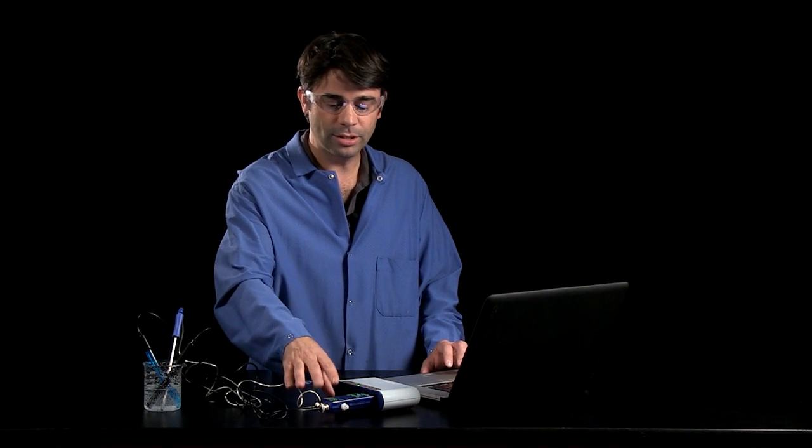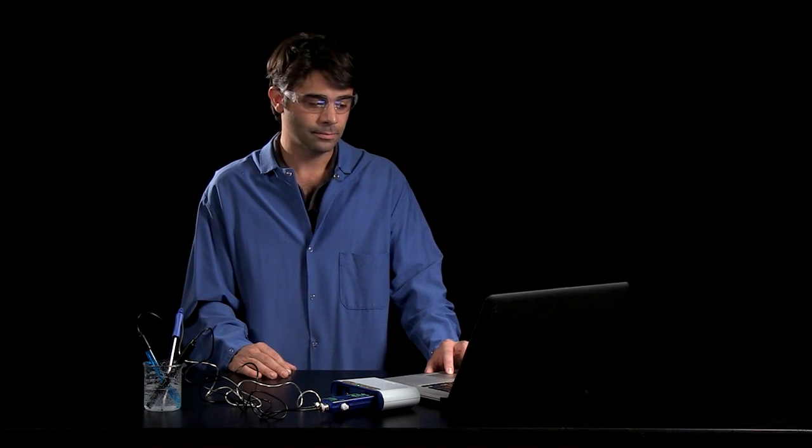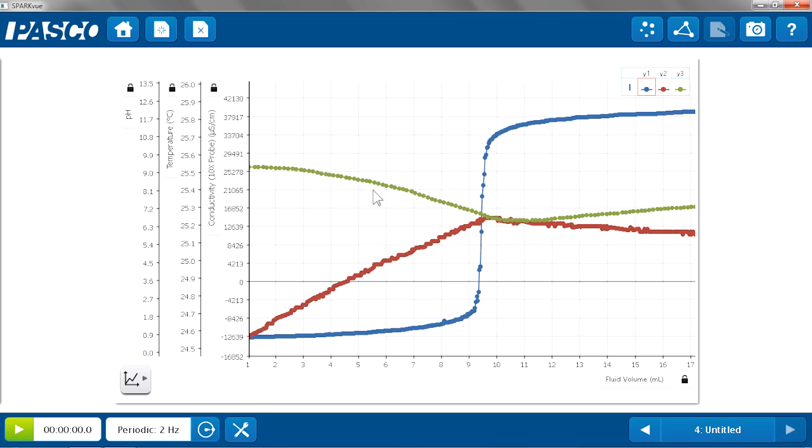And again, because of the multi-measure nature of this, I can look at all those things simultaneously. And this is really where the big ideas can come together. Here's my graph of pH, my Y1. Temperature, my Y2, the red one. And conductivity, the Y3. And I can see they all meet up at the same point where the equivalence point was reached, and that's where the inflection points for those graphs were.